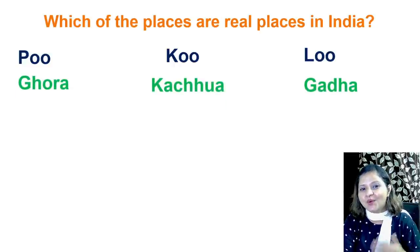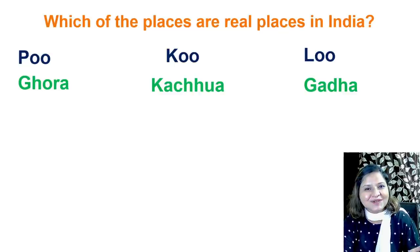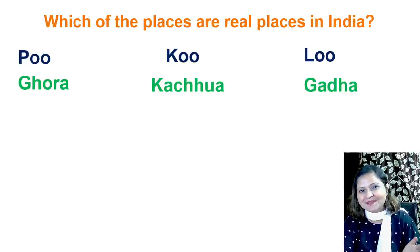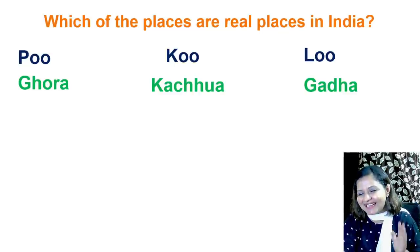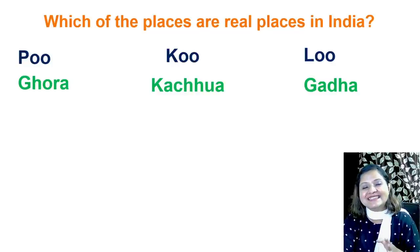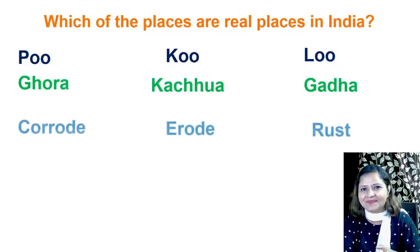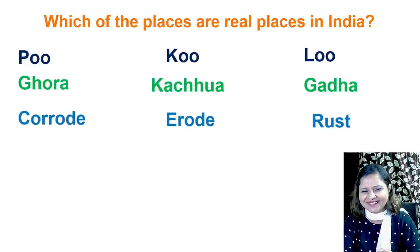Next example: Khoda, Kachua, or Gada — do you know this one? The answer is Khoda. It is a real town in Gujarat.